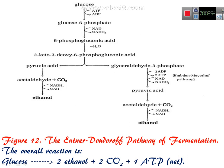Looking at the overall reaction of the ED pathway: one molecule of glucose is converted to two ethanol molecules, plus two carbon dioxide molecules, and two ATPs are generated by substrate-level phosphorylation via the Embden-Meyerhof pathway. However, since one ATP is consumed during the conversion of glucose to glucose-6-phosphate, there is only a net gain of one ATP in the ED pathway.